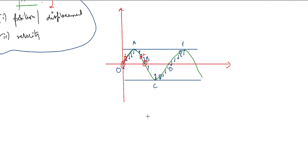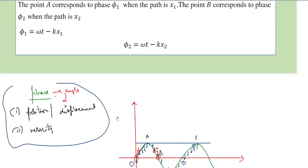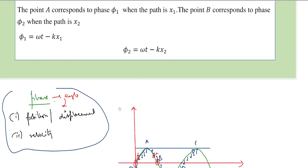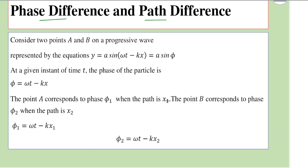We can connect phase difference with path difference. By knowing what the path difference is, we can find out what is their phase difference. So let's find out the relationship between phase difference and path difference. To understand this, let's recall the wave equation: y = A sin(ωt − kx), assuming the initial phase difference is zero.